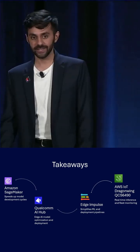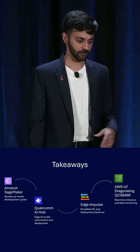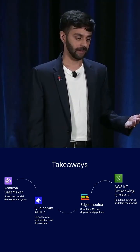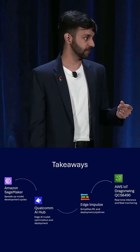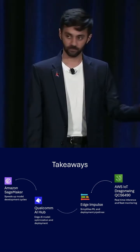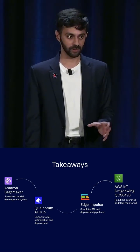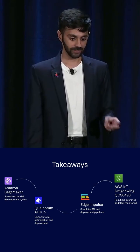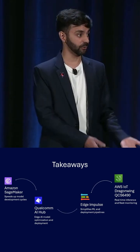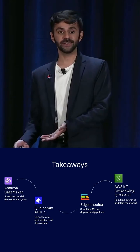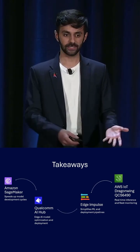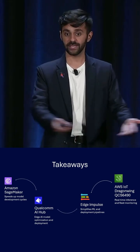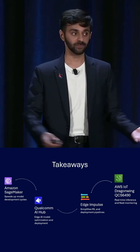For final takeaways: we started with SageMaker, which really speeds up your development time. We took the model and had Qualcomm AI Hub optimize it. Then we had Edge Impulse take that model and put it into a more easily deployable artifact.